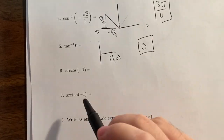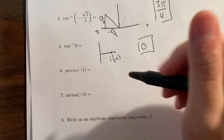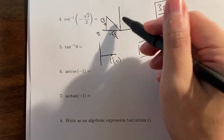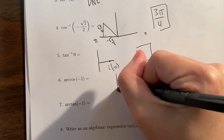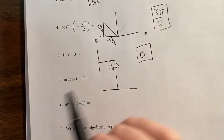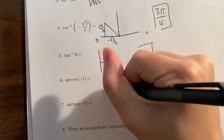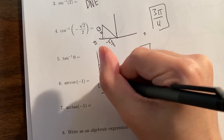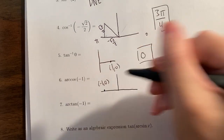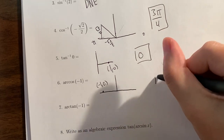For arc cosine of negative 1: cosine answers live between 0 and pi, so we draw those two quadrants. We want an x-coordinate of negative 1, which is the point (negative 1, 0). The angle that corresponds to that is pi. So the answer is pi.